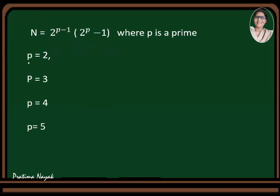Now I will start with p is equal to 2. Let us see what will happen. So it will be 2 to the power 2 minus 1, multiplied by 2 to the power 2 minus 1. So how much it will be? 2 to the power 2 minus 1 is 1. So 2 times, 2 to the power 2 is 4, 4 minus 1 is 3. So I am getting 2 times 3, that is 6. So 6 is your first perfect number.